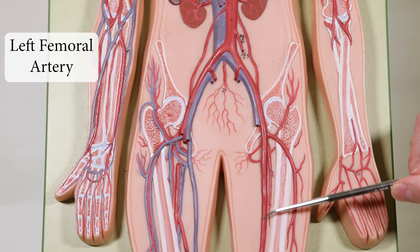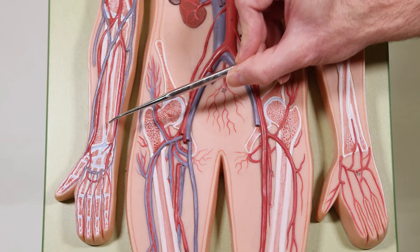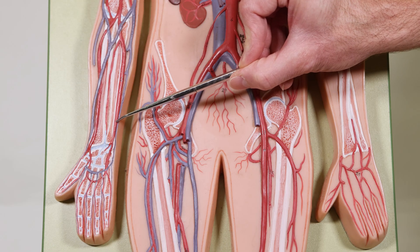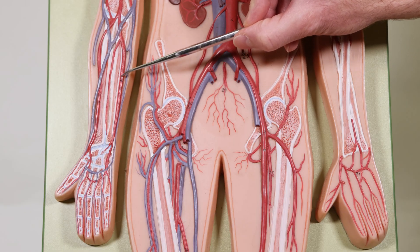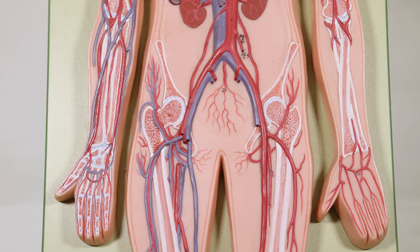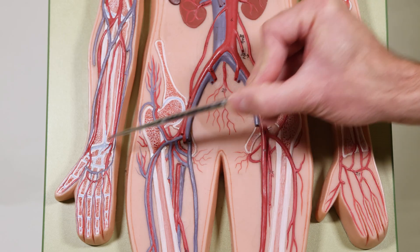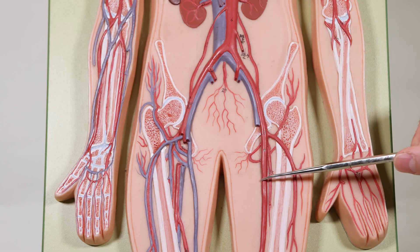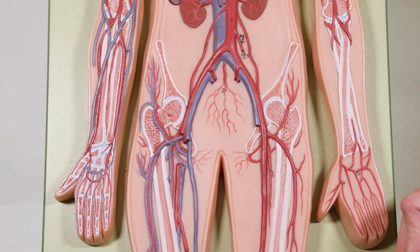Following down into the leg, this is the left femoral artery. In the forearm view, you can now see the right radial artery on the left side and the right ulnar artery, with that loop being the palmar arch. Continuing down through the rest of the left femoral artery, it becomes the left popliteal artery.